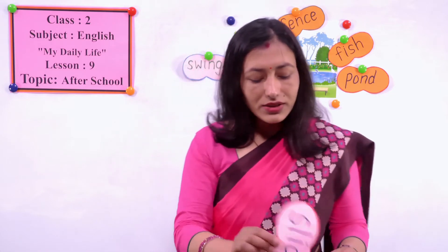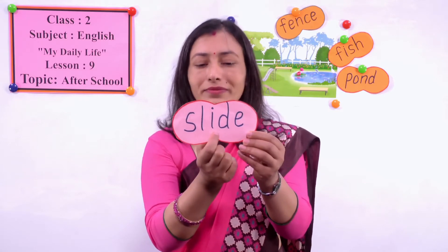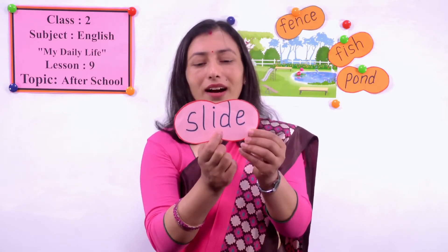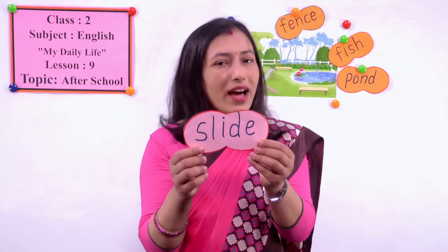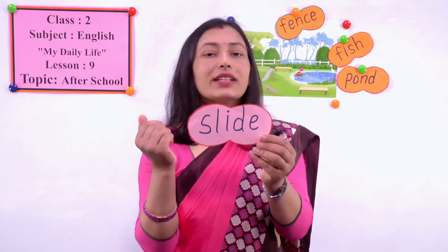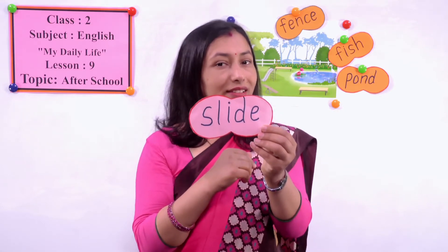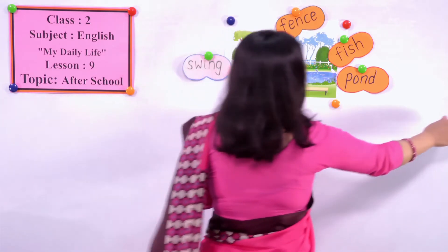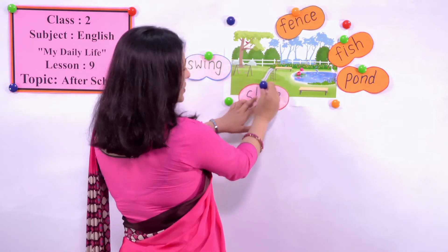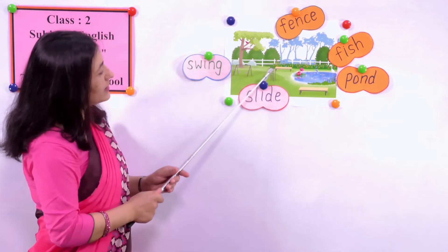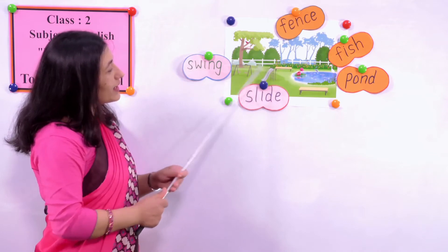Now look at another word. S-L-I-D-E. How do you pronounce? Good - slide. Say after me: slide. One more time: slide. Yes, you play slide, you like playing slide. And here we can find slide in the picture. S-L-I-D-E. Slide. Here is a slide. Yes.